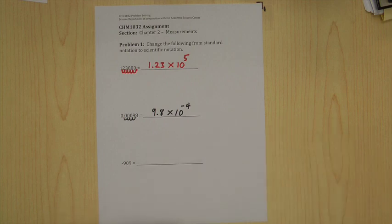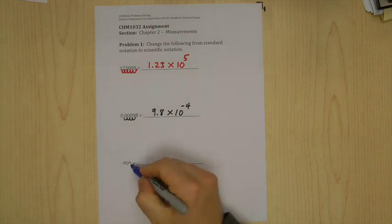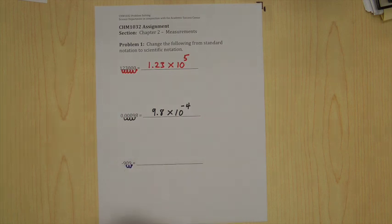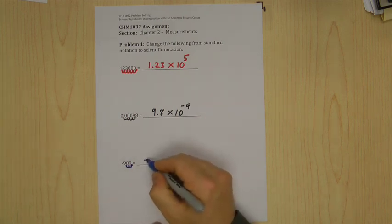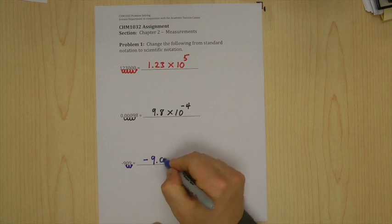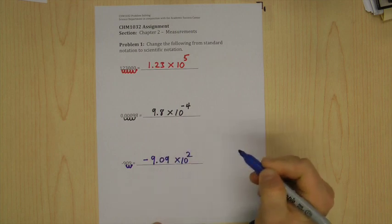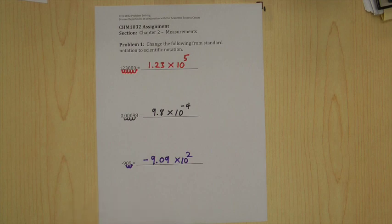So here we go, last example: negative 909. Again, a little bunny is at the end of the number. He's going to hop behind the first digit. There we go. The answer here is negative 9.09 times 10 to the 2. All right, and that's in essence how you do it.